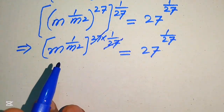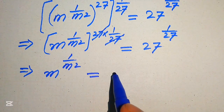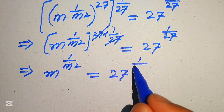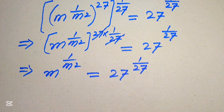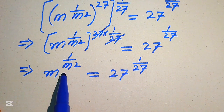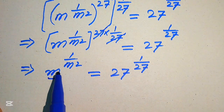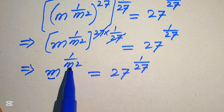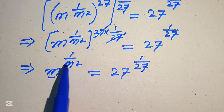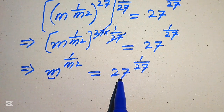So now we have m to the power of 1 over m squared equals 27 to the power of 1 over 27. Focus on the left hand side: the exponent 1 over m squared is the square of the reciprocal of the base m. We need to create the same type of condition on the right hand side, where the exponent is the square of the reciprocal of its base.